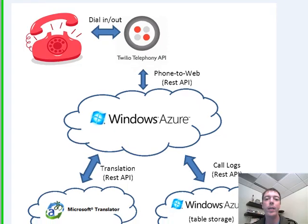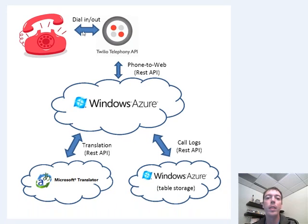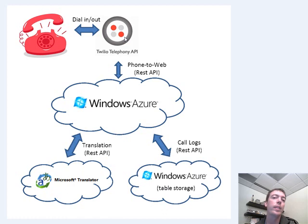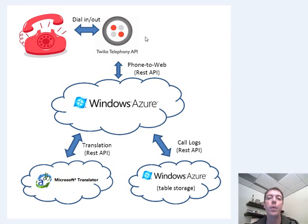While it's processing, I'm going to pull up a quick diagram to show what's happening. So the voice is going into the Twilio API and from there it's doing the voice-to-text translation. That text is then sent to a site running on Windows Azure and from there the text is sent to the Microsoft Translator API. Once that text has been translated to Spanish, it's kicked back up to Windows Azure and it calls the Twilio REST API to make a call back to my number.